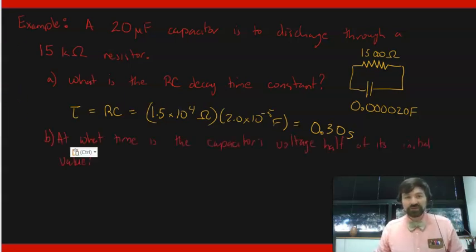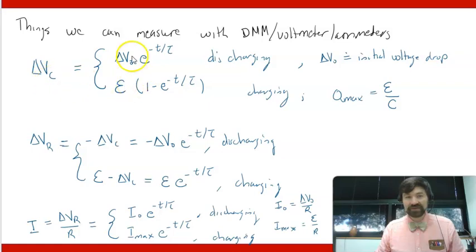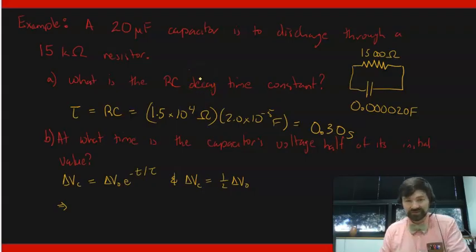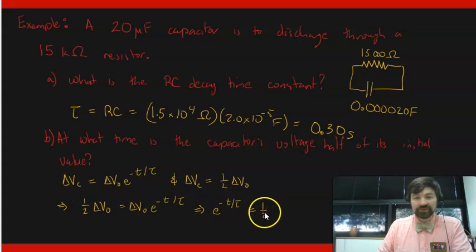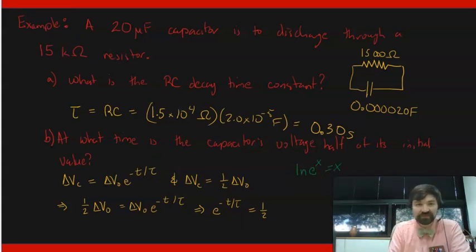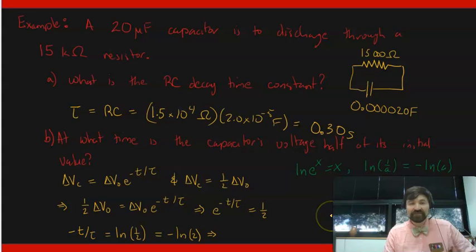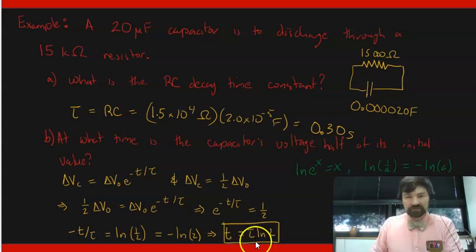We also want to know at what time the capacitor's voltage is half of its initial value. So to do this we set up the equation from our delta V capacitor for the discharging case. And then we also note that the delta V_C is going to be half of the initial value. So if you combine these two equations you get that e to the negative t over tau is 1 half. So to get rid of the exponent you have to take a logarithm, natural logarithm of both sides. Natural log of e to the x is just x in other words. Also the natural log of 1 over a is negative of the natural log of a. So putting all that together you get t is tau ln 2, an important result that's about 0.21 seconds.